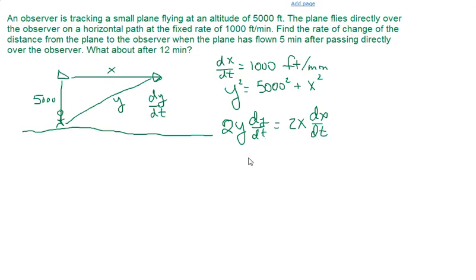Since we're going to be interested in calculating dy/dt, let's solve for dy/dt. So we will be dividing by 2y and when we simplify that we're going to get x/y times dx/dt.